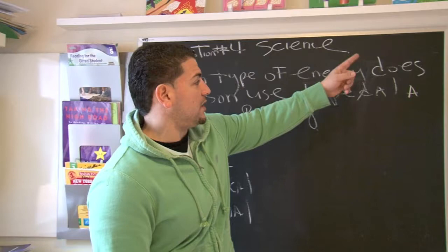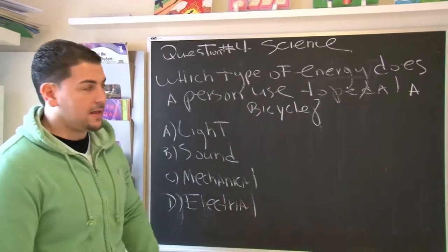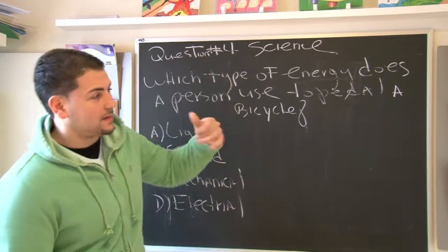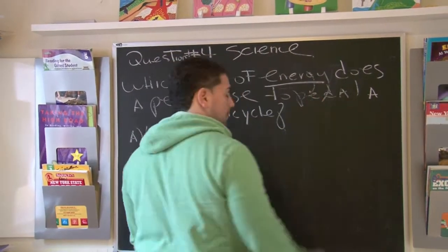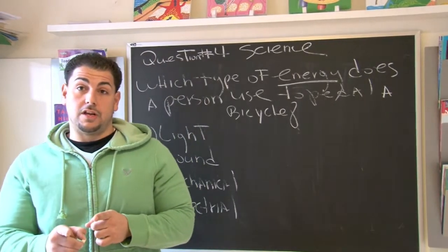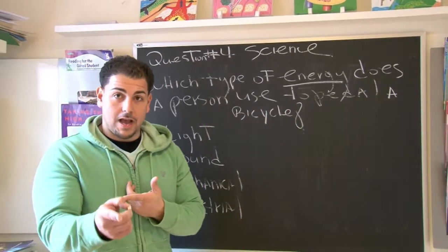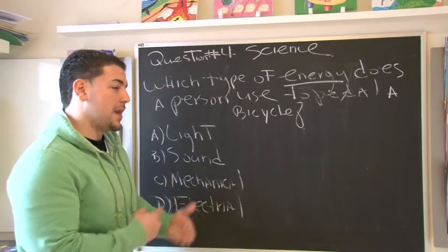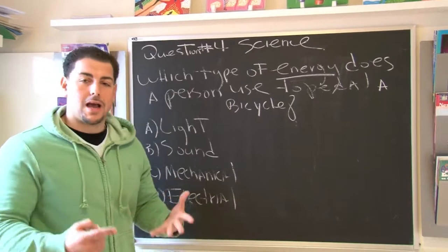It says which type of energy does a person use to pedal a bicycle? Stop right there. What we're trying to identify is the key word in this whole question. Well, the key word is energy. But who's using the energy? A person pedal a bicycle. That means you. So think about yourself. You're pedaling a bicycle. You're using energy. What we're trying to find out is what kind of energy.